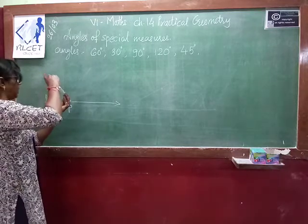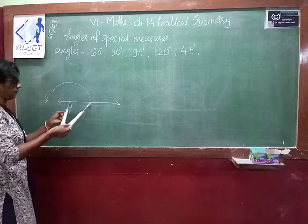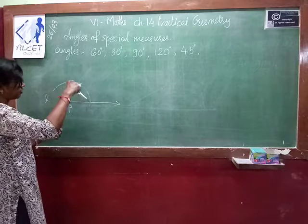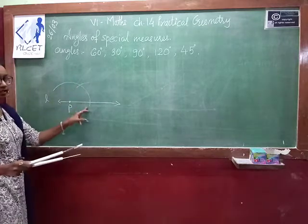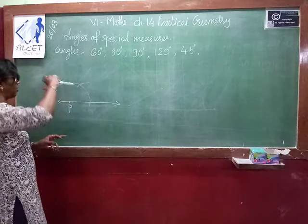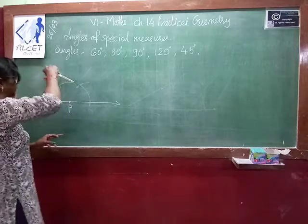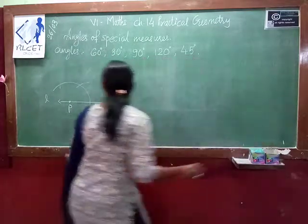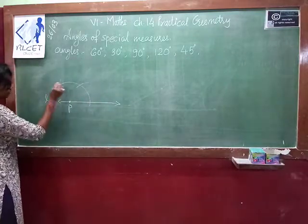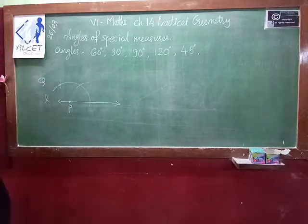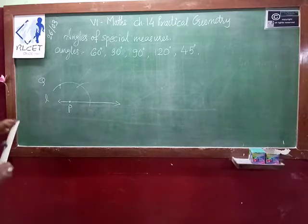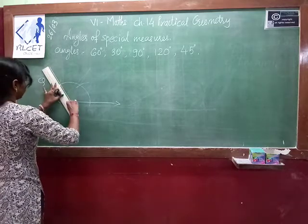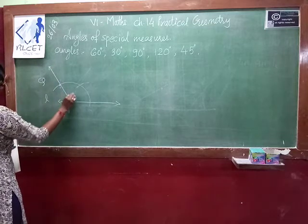So first we draw an arc from P — this gives your first 60 degrees. Without changing the measurement, from that arc intersection point draw another arc — that gives another 60 degrees. So 2 times 60 means 120 degrees. Name that point Q and join P and Q. This is your 120 degree angle.